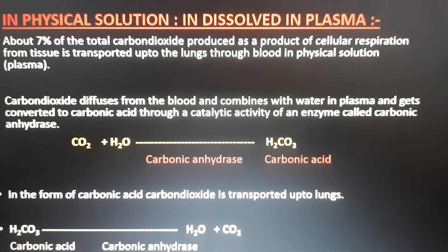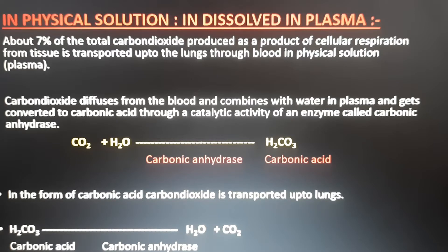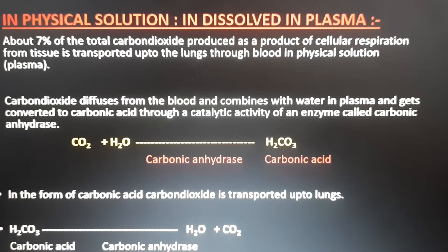The first method is dissolved in plasma. About 7 percent of the total carbon dioxide produced as a product of cellular respiration from tissue is transported to the lungs through blood in physical solution, that is plasma. Carbon dioxide diffuses from the blood and combines with water in plasma.